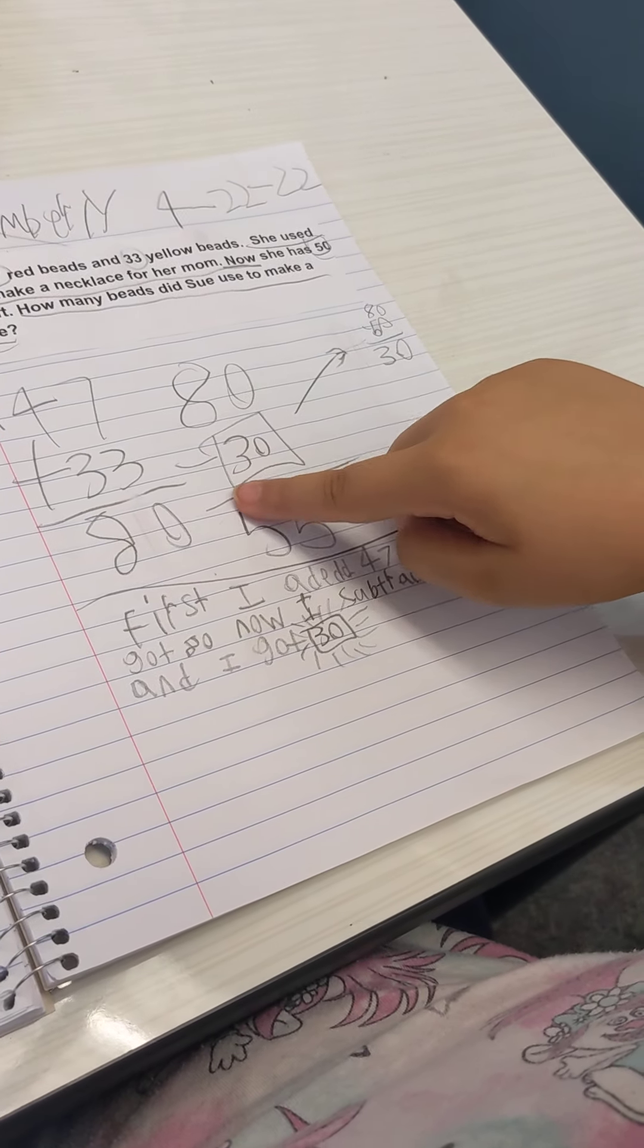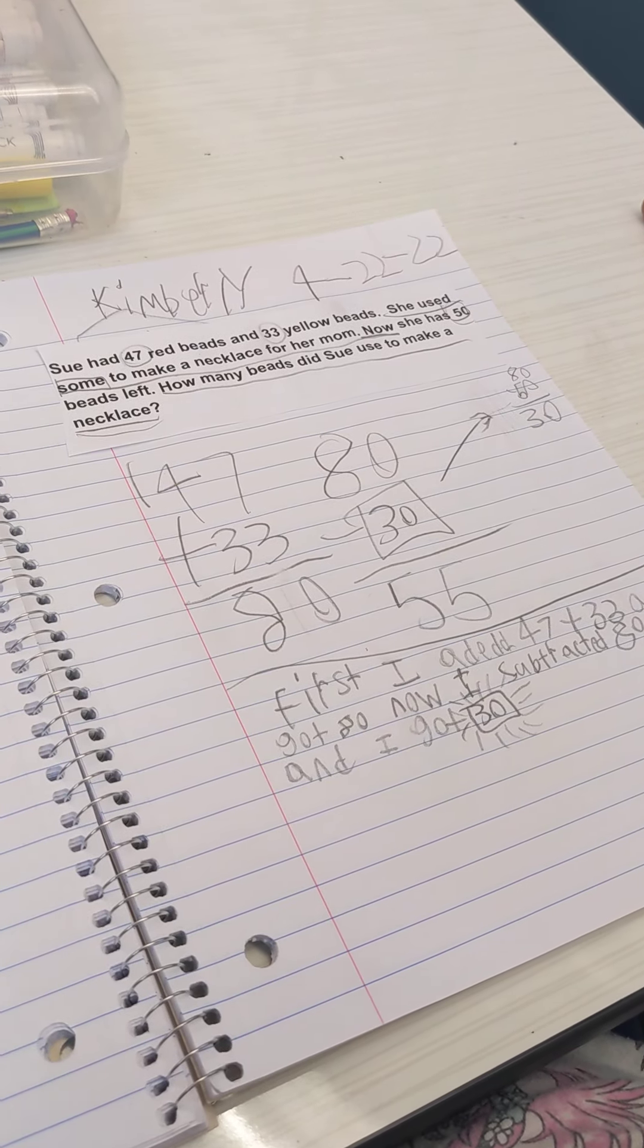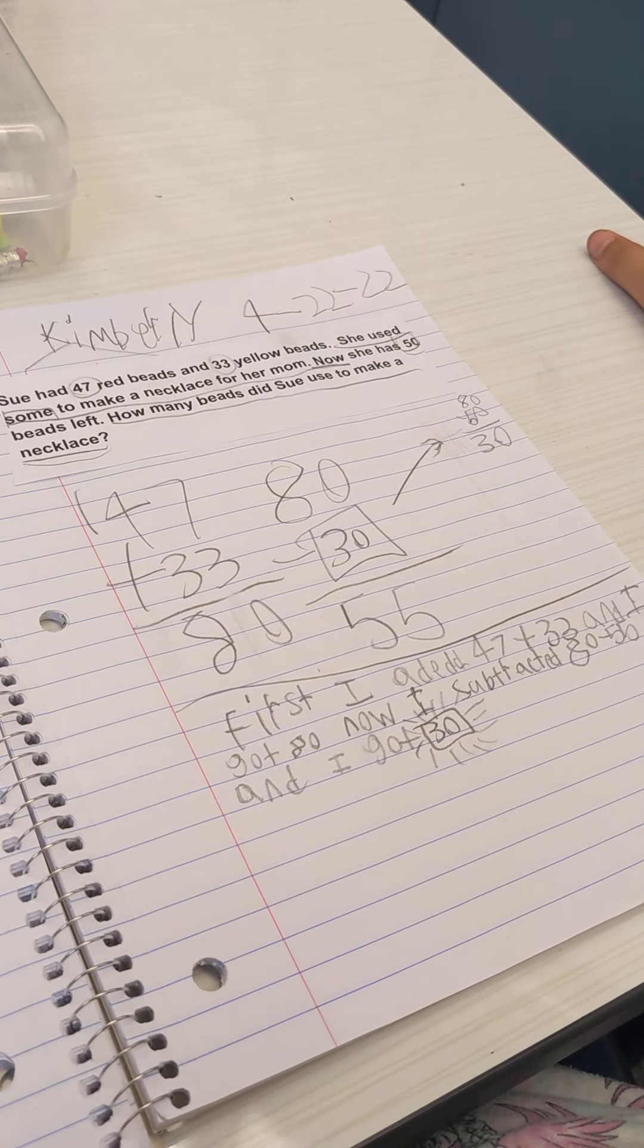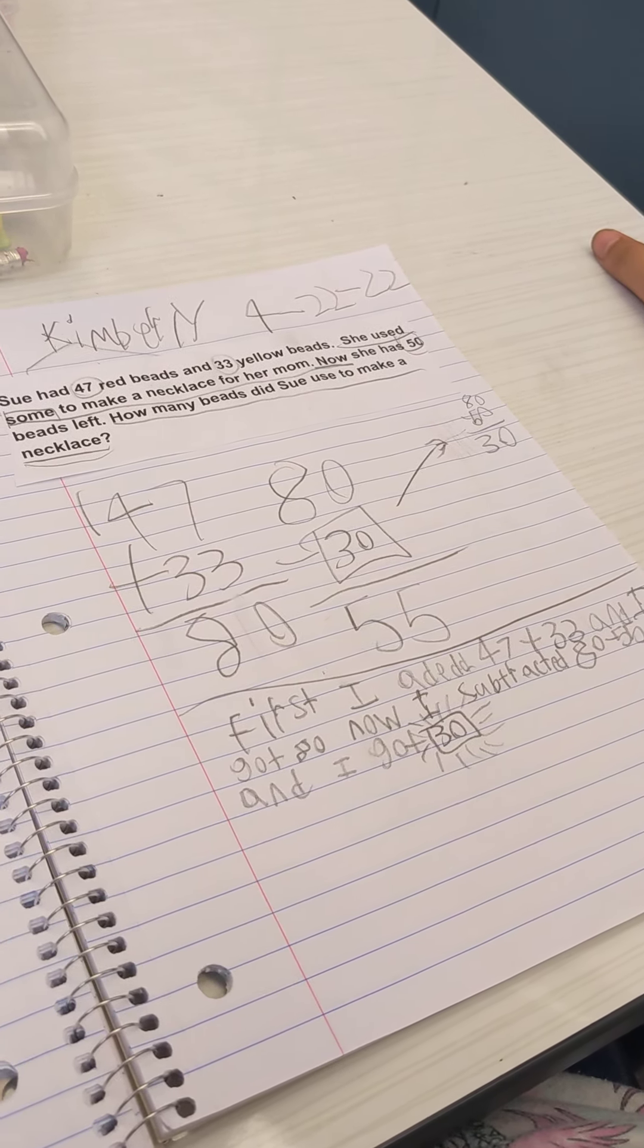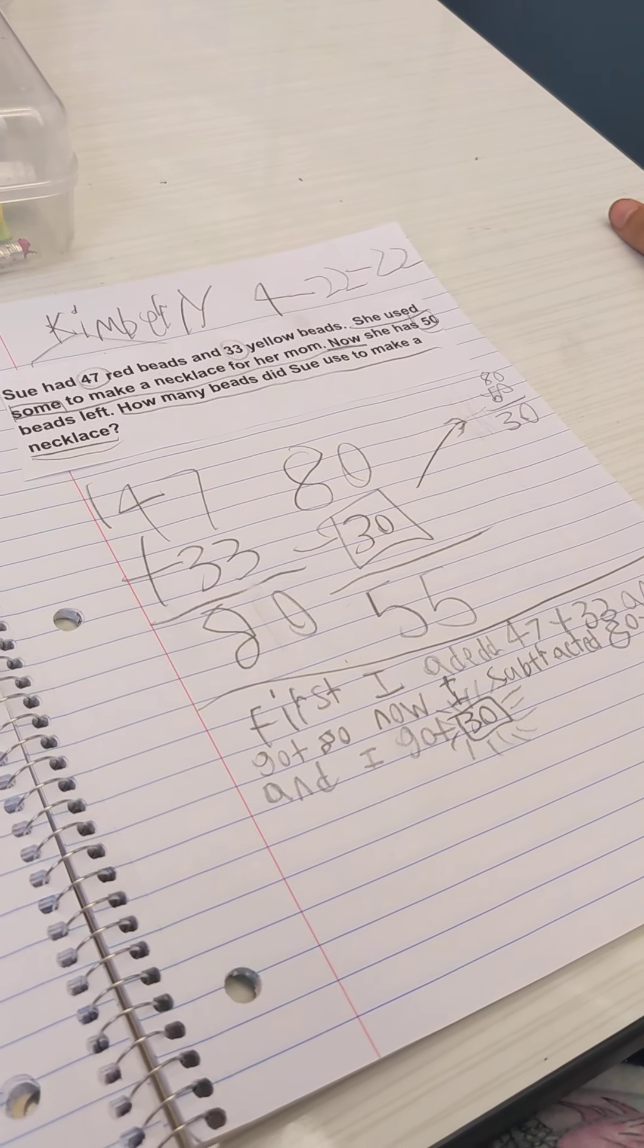Got 30, so then I got 30 as my answer. Okay, so you described all the steps that you did, but what I still didn't hear you say is why did you choose to add 47 plus 33? What made you decide to add those two numbers?